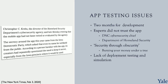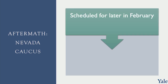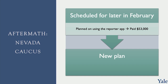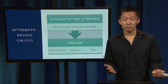According to a person familiar with the app, its creators had repeatedly questioned the need to keep it secret, especially from the Iowa precincts where it would be used. Looking at the aftermath, the Nevada caucus, which had been scheduled for later in February, had planned on using pretty much the same app and had already paid $53,000 for it. But after seeing this app completely fail in Iowa, they scrapped it for a new plan in literally two weeks using Cisco Secure iPads, Google Forms, and paper — and it worked great.